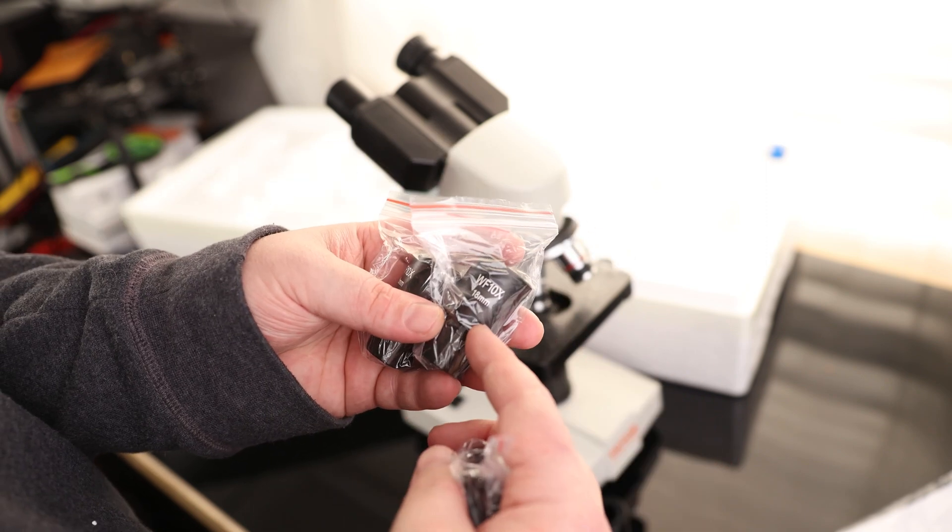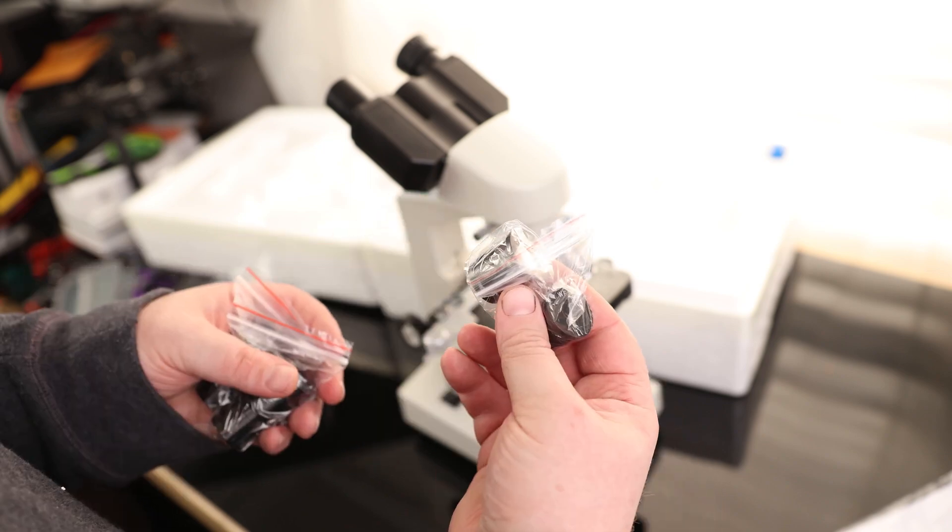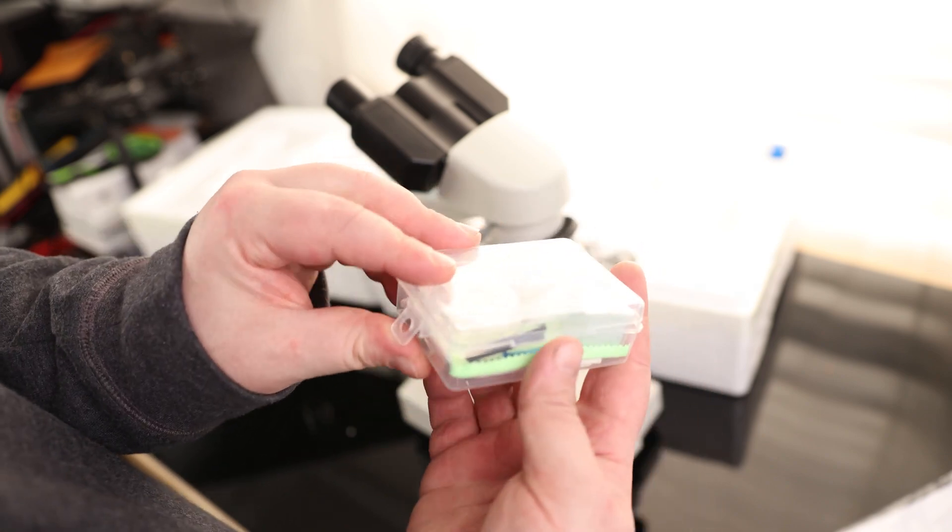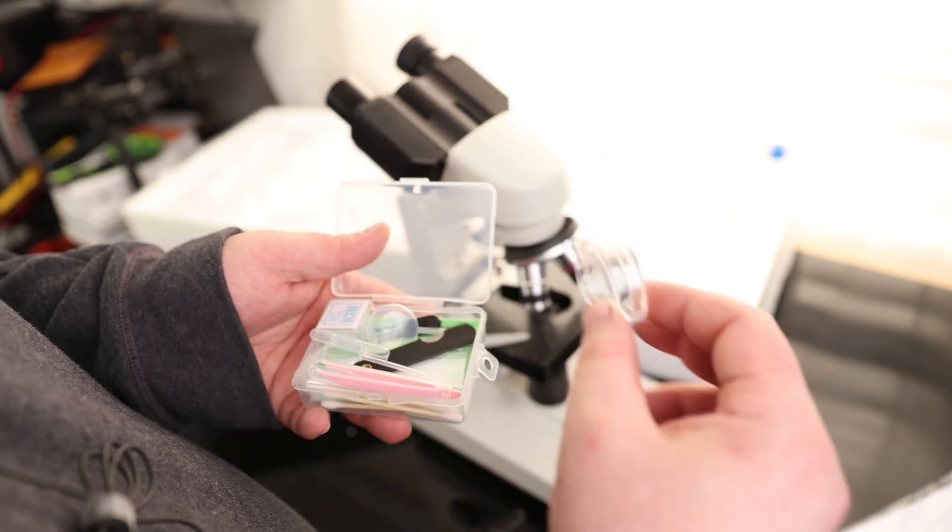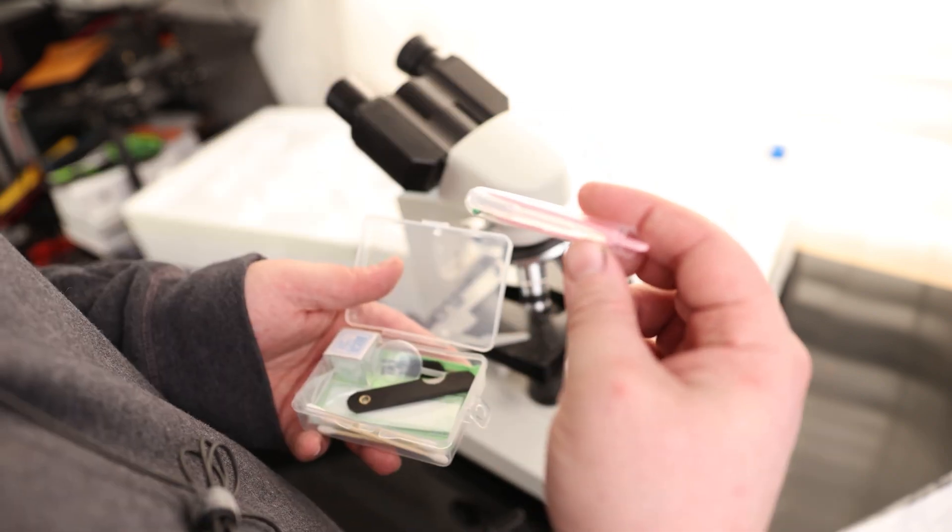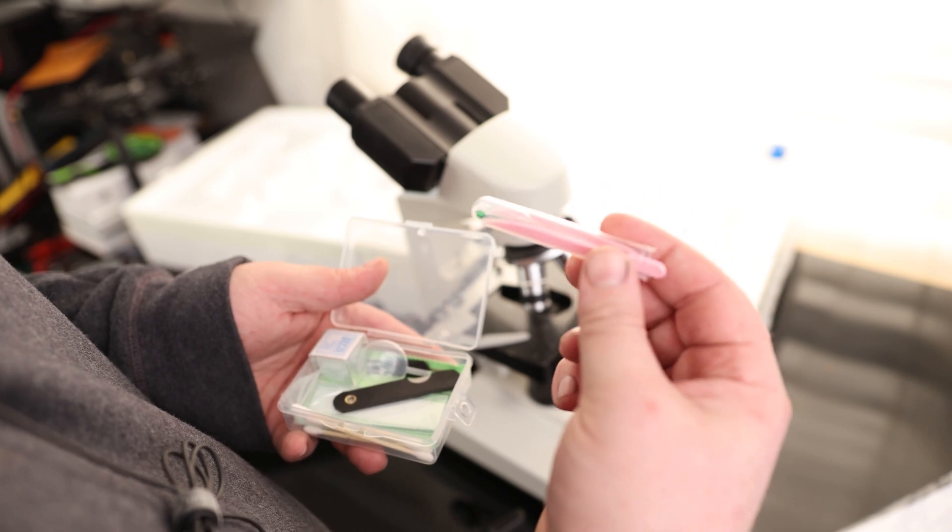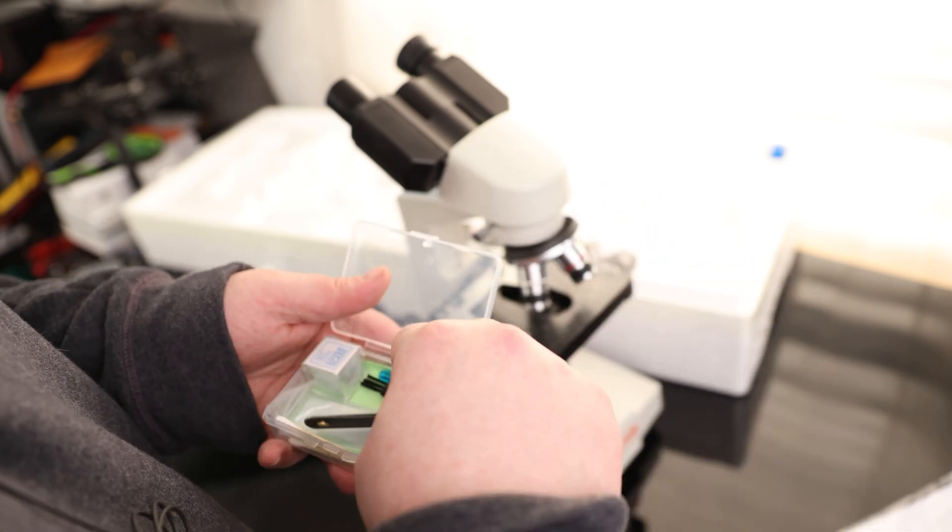And then we've got two sets of lenses. So these are both 10x and these are both 25x. This is cool. So it comes with some lab equipment as well. So we've got a petri dish. We've got a sample collector. Some tweezers. Looks like we've also got a bulb and a pin. We've got all kinds of fun stuff in here.